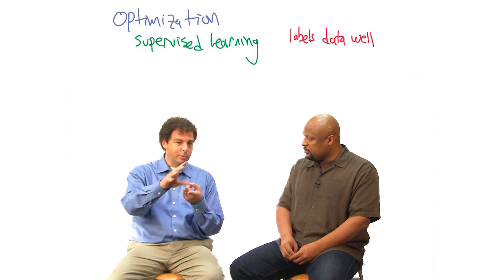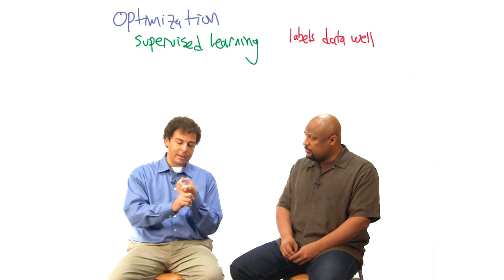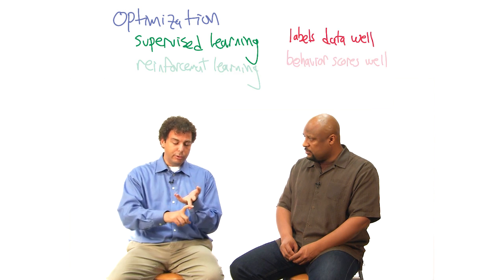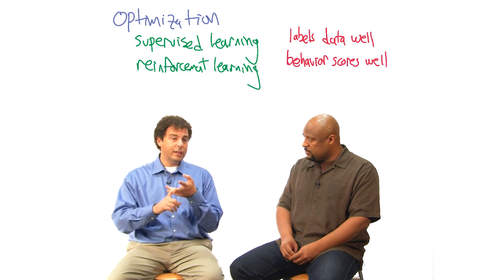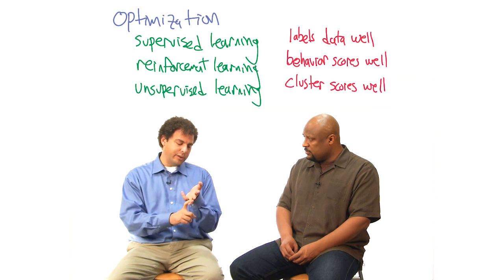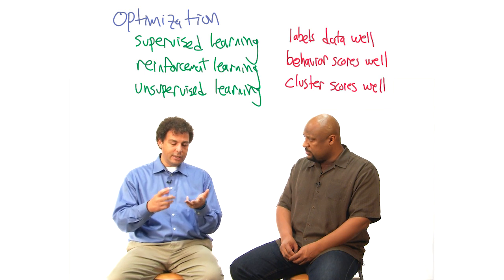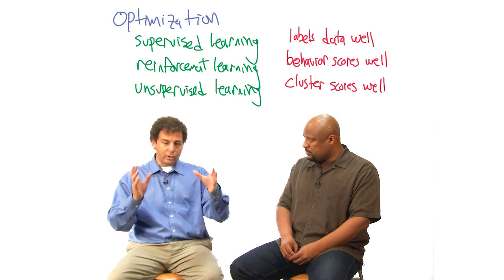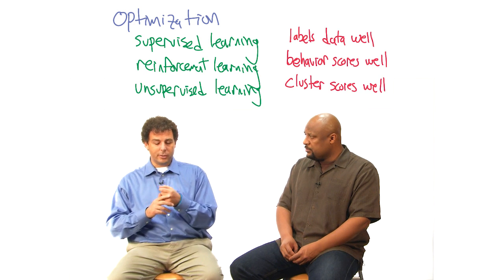In supervised learning, you want something that labels data well — you're trying to find a function that does that and score it. In reinforcement learning, we're trying to find a behavior that scores well. And in unsupervised learning, we usually have to make up some kind of criterion and then find a way of clustering or organizing the data so that it scores well. That was the first point.